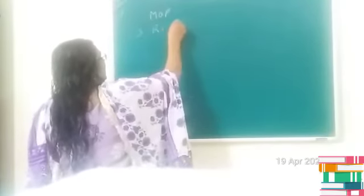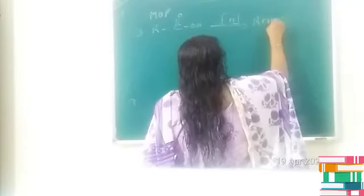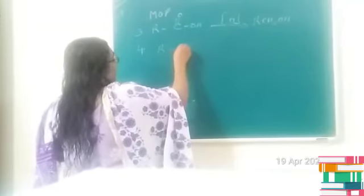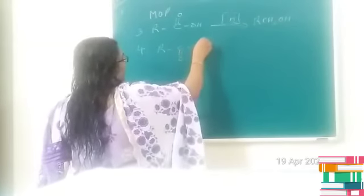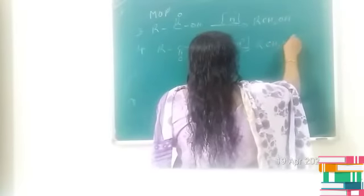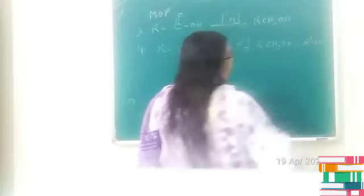The next method is from carboxylic acids. Carboxylic acid RCOOH undergoes reduction to give RCH₂OH as the product. We can also prepare alcohol from esters: RCOOR' undergoes reduction to give RCH₂OH and R'OH as products.